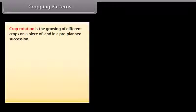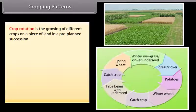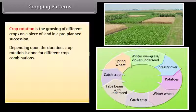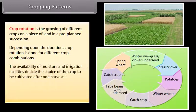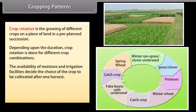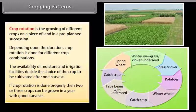Crop rotation is the growing of different crops on a piece of land in a pre-planned succession. Depending on the duration, crop rotation is done for different crop combinations. The availability of moisture and irrigation facilities decide the choice of crop to be cultivated after one harvest. If crop rotation is done properly, two or three crops can be grown in a year with good harvests.